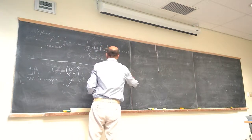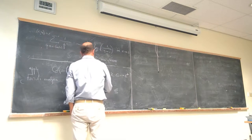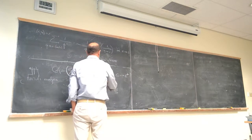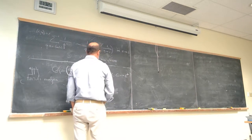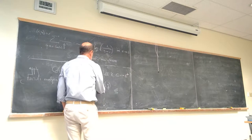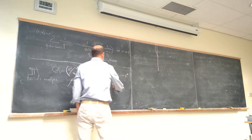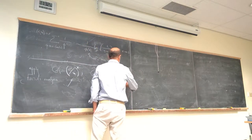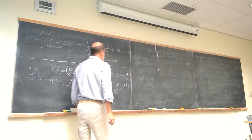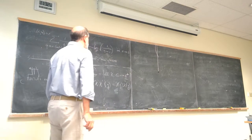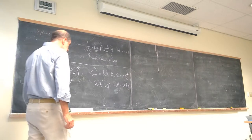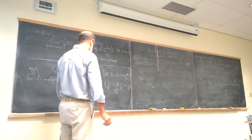If you have two characters, you get another one by defining the product character: (chi · chi')(g) = chi(g) · chi'(g). You use the multiplication in C* to get a product on the set of characters, and that makes another abelian group.